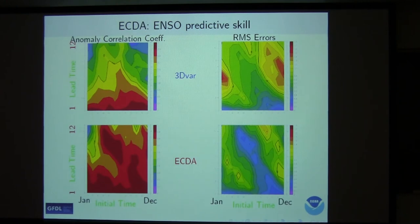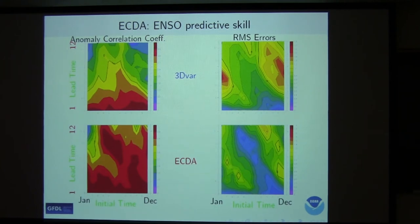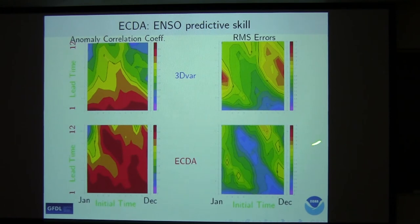Audience question: What variable is the anomaly correlation for? Answer: This is ENSO, it's Nino 3.4. Question: And the 3D-Var means initialization for the ocean separately? Yes, right. We compare with our own 3D-Var, because you can't claim too much comparing with other groups — people will argue we use different data. But internally we think this is a very meaningful improvement.